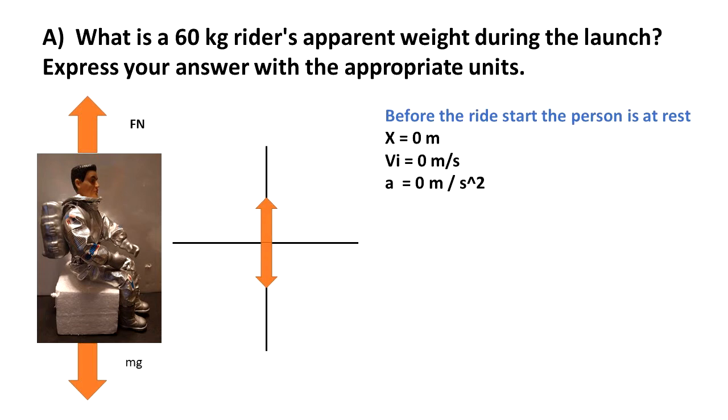Let's do the free body diagram for this case. As shown in the picture, the normal force FN is going up and mg is going down. As it can be observed in the free body diagram, the rider is in static equilibrium. The summation of the forces in the y direction is equal to 0.